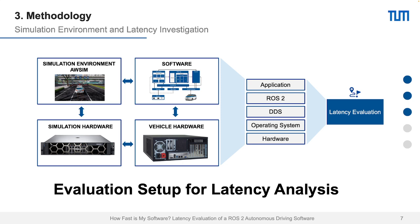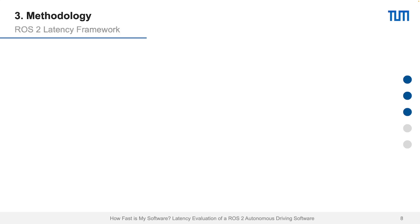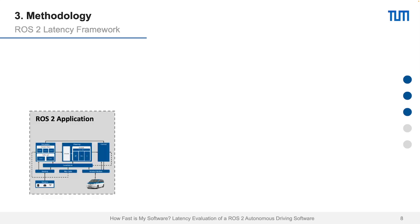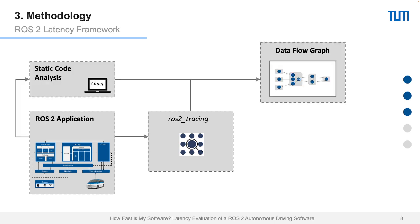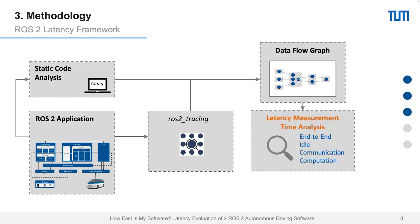With this methodology, we analyze the whole system. In addition, we provide a specific ROS2 analyzing system called ROS2 tracing, which we developed and presented in another paper. We perform a static code analysis and then provide a data flow graph. Ultimately, with this setup and the simulation environment, we can obtain information on four different times: the end-to-end time, the idle time, the communication time, and the computation time — providing a detailed analysis of all given times in the ROS2 autonomous driving software.